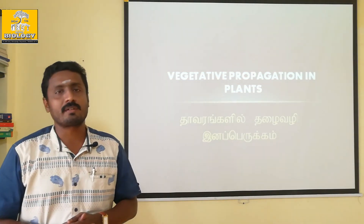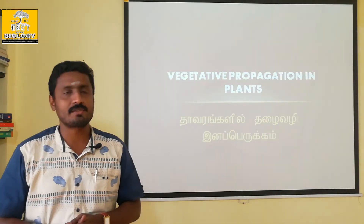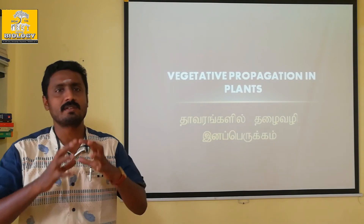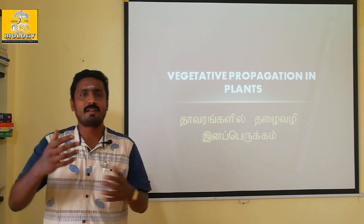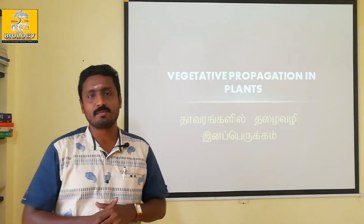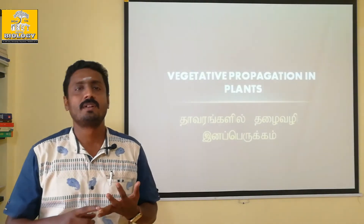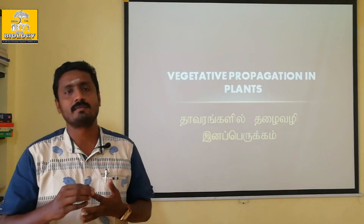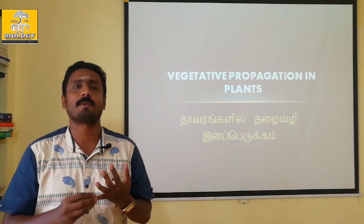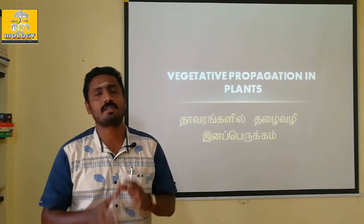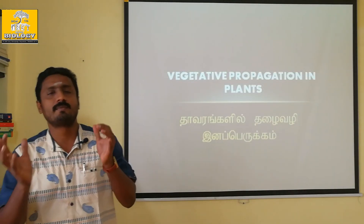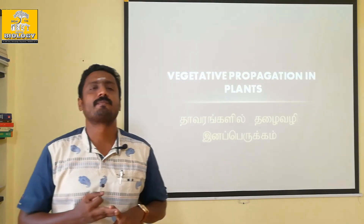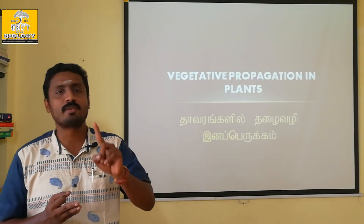The vegetative part of a plant includes one leaf, stem, root, flower, seed, and fruit. The root, stem, and leaf together form what is called the vegetative part of the plant.